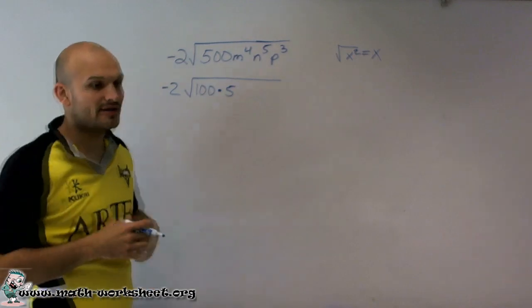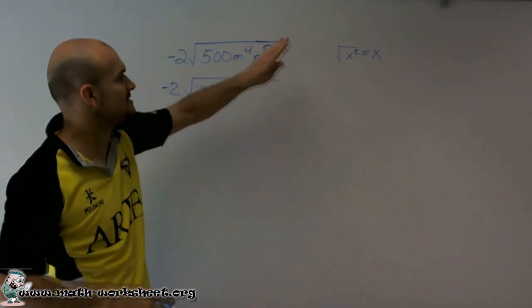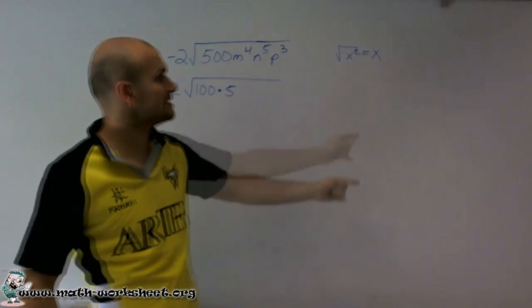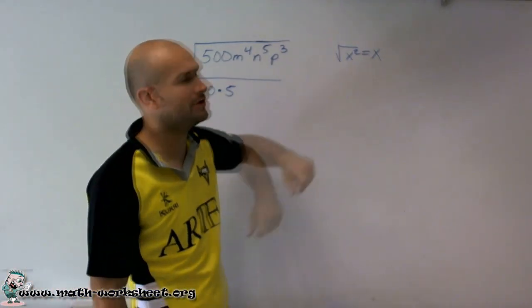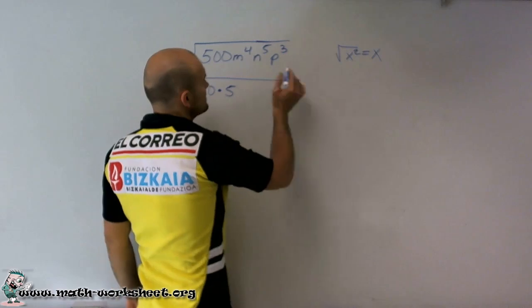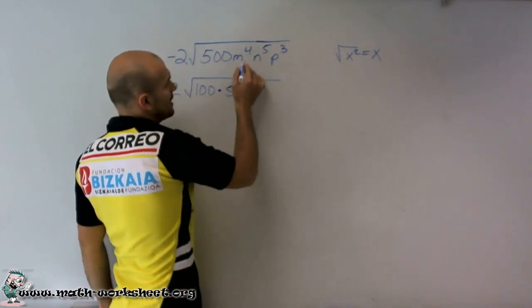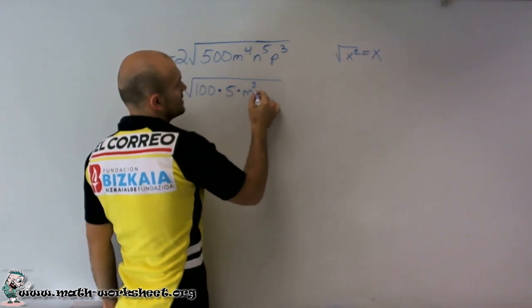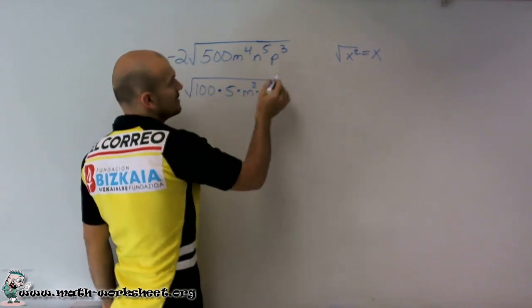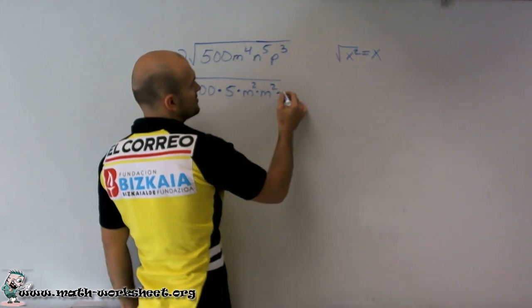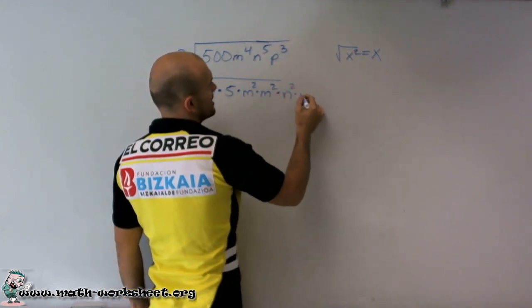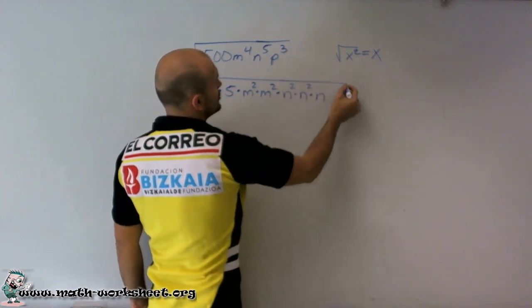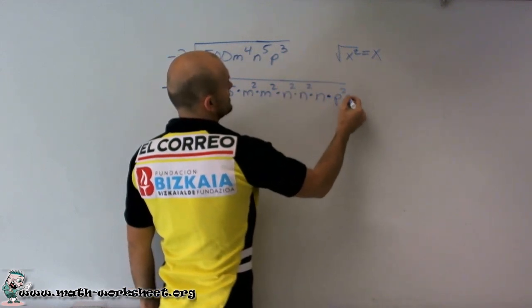Now I need to see how can I rewrite m to the 4th, n to the 5th, and p to the 3rd as a product of a square number that I can take the square root of. And m to the 4th can be m squared times m squared, n to the 5th could be n squared times n squared times n, and p cubed can just be p squared times p.